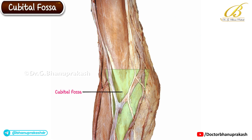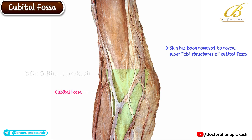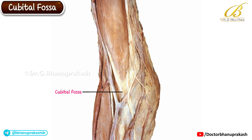Now let's take a look at the cubital fossa. This image shows the anterior view of the elbow region where the skin has been removed to reveal the superficial structures of the cubital fossa. The cubital fossa is a triangular depression located in front of the elbow joint. In this specimen we are observing the contents of the superficial fascia which forms a part of the roof of the cubital fossa.